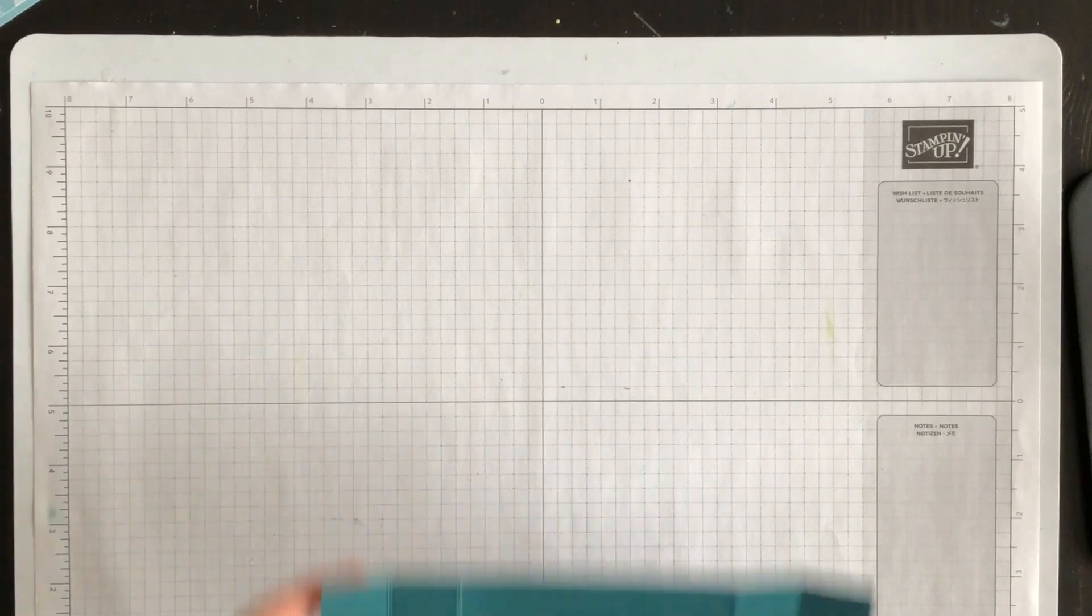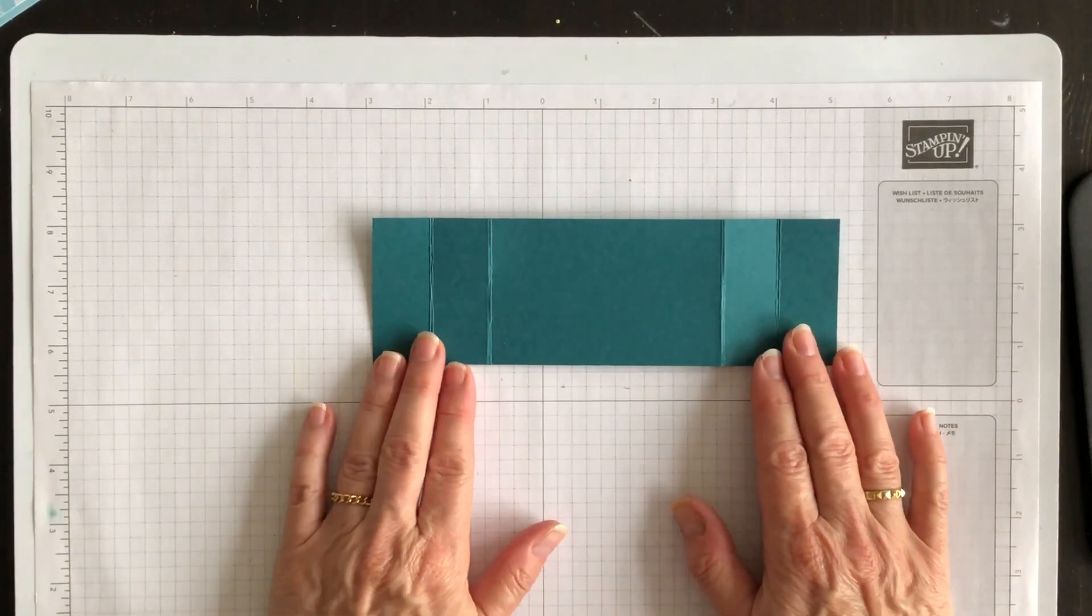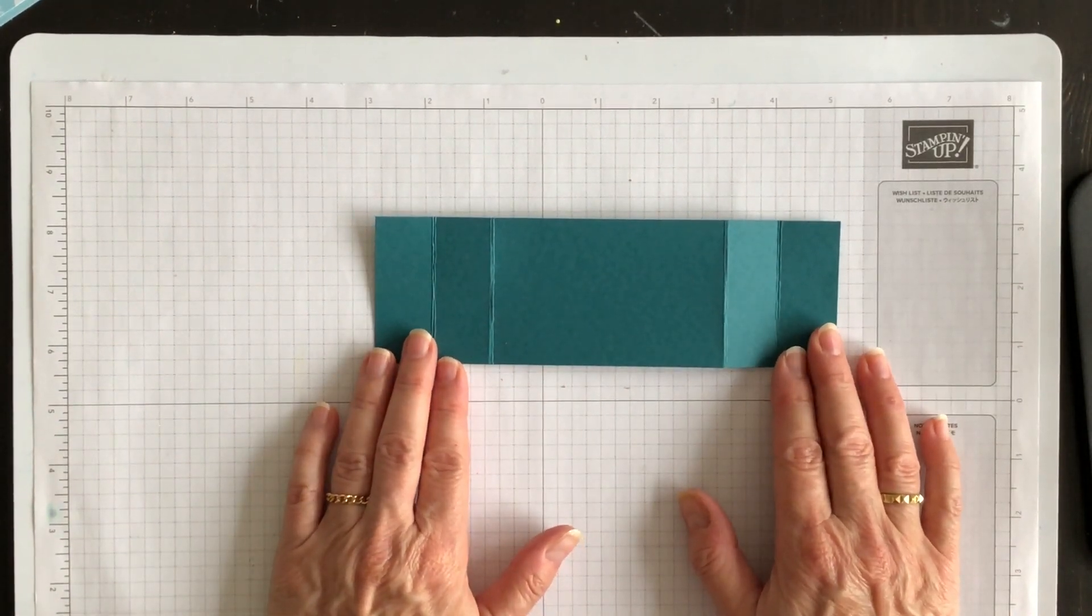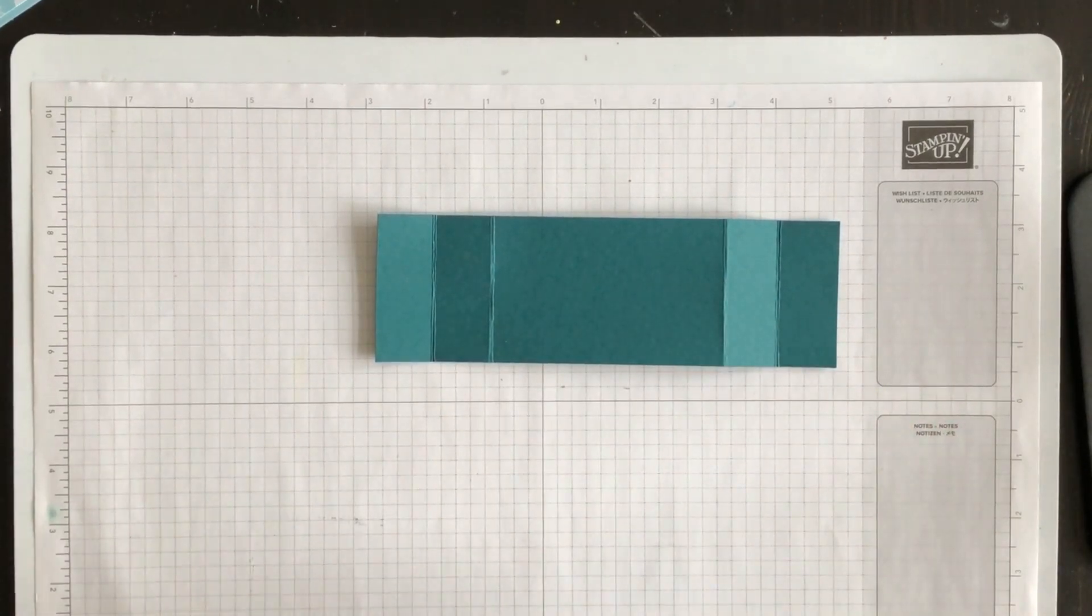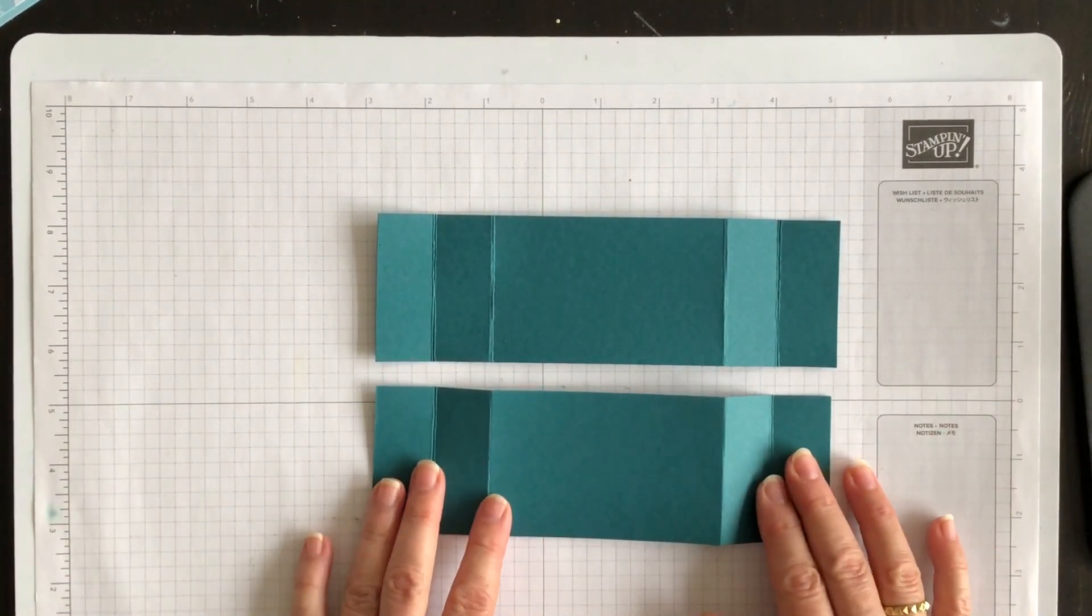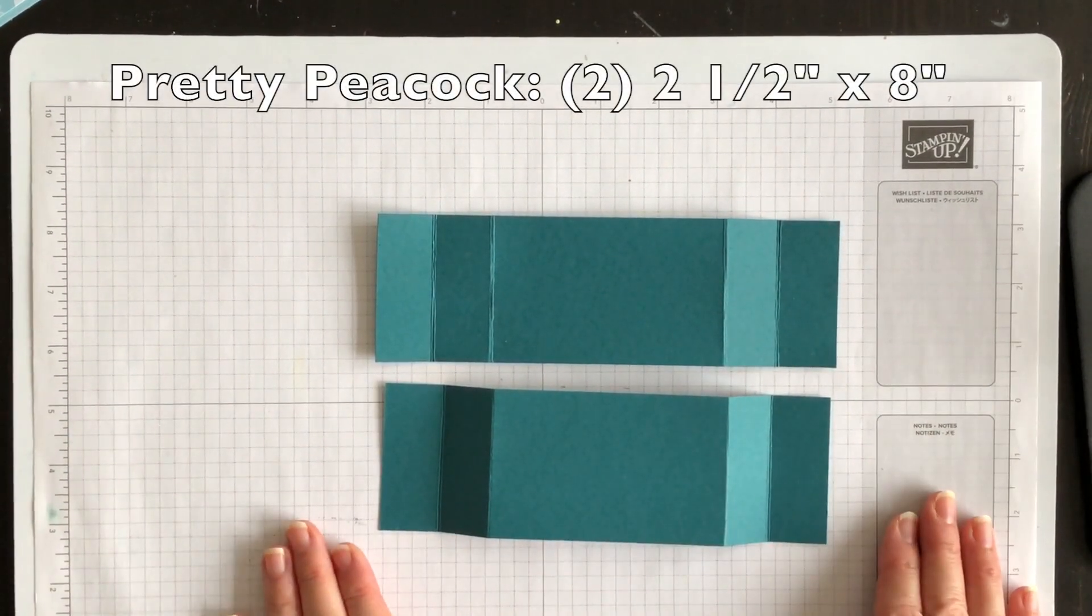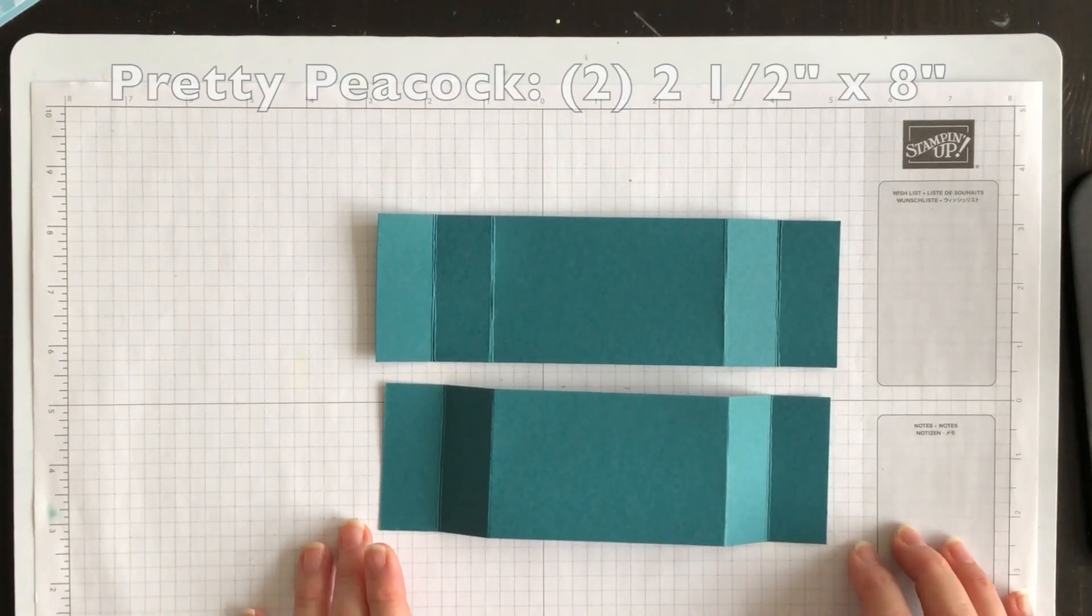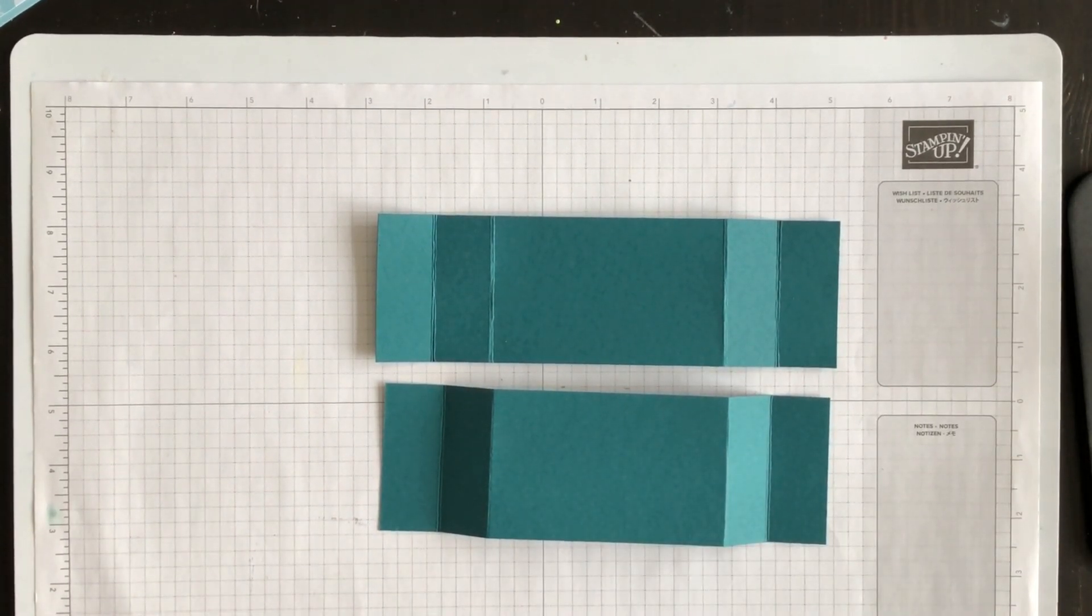And now it's time to create our fun fold. Now, what I'm going to do is use two pieces of pretty peacock cardstock. I've already got them cut and scored, so let me put the measurements for the cutting and then you want to bring in your Simply Scored.